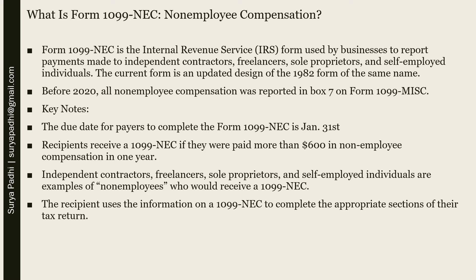used by businesses to report payments made to independent contractors, freelancers, sole proprietors, and self-employed individuals. The current form is an updated design of the 1982 form of the same name. Before 2020, all non-employee compensation was reported in box 7 on Form 1099-Miscellaneous.